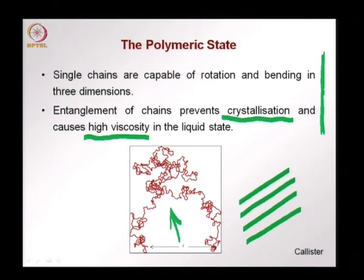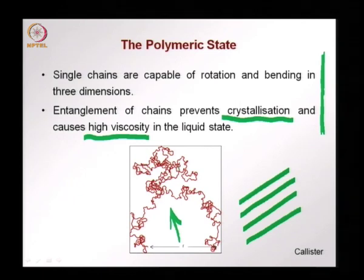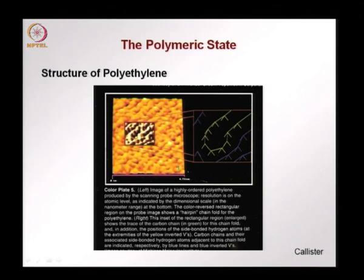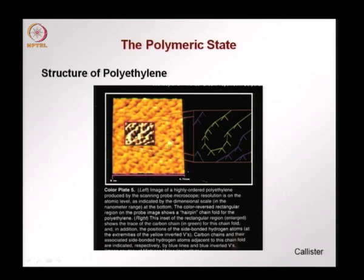Two very important consequences of the covalent bond within the polymer state are: it gives rise to a lot of ability for the chains to rotate and bend, which prevents crystallization and reduces the level of crystallization in polymers making them more amorphous; and they become highly viscous as polymer chains are formed and made to flow. An image from scanning probe microscopy from Callister shows different chains of polyethylene entangled, illustrating how each chain is arranged.